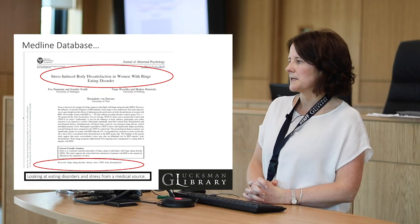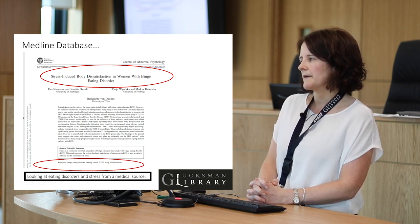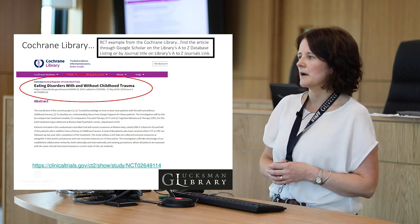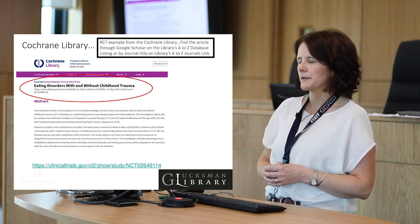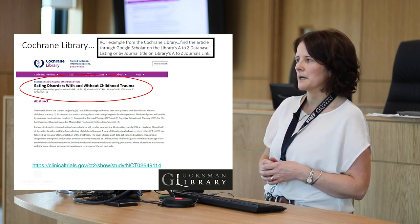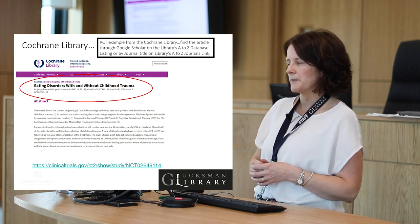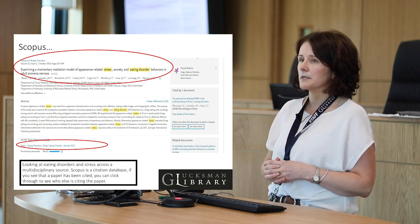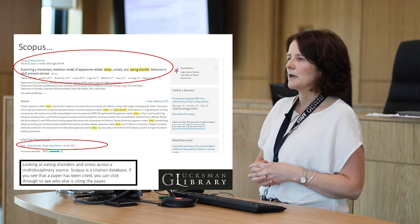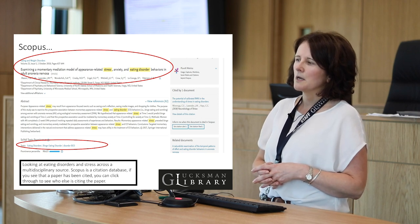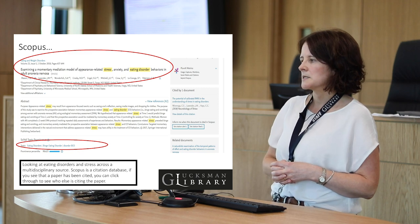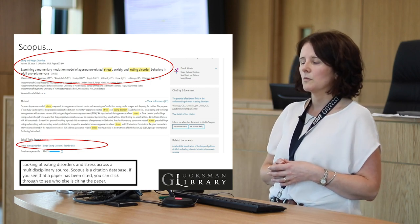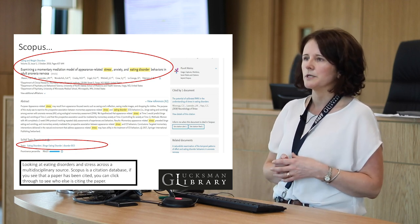We can also look in Medline, the database for medicine, where we might find a paper on stress-induced body dissatisfaction in women with binge eating disorder. The Cochrane Library — a key resource for evidence-based healthcare — contains the Central Register of Controlled Trials as well as systematic reviews. Scopus is a multidisciplinary database, and it's a good idea to use it to test your search across disciplines. Scopus is also a citation database, meaning you can click into citations to see what papers are citing a given paper, leading you to further relevant information.